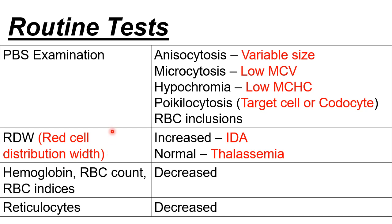Next, looking at the CBC: RDW stands for Red Cell Distribution Width. In IDA, the expected RDW is increased, while in thalassemia the RDW is normal — please take note of this important distinction. You may also expect decreased levels of hemoglobin, RBC count, RBC indices including MCV and MCHC, and also reticulocyte counts are low.